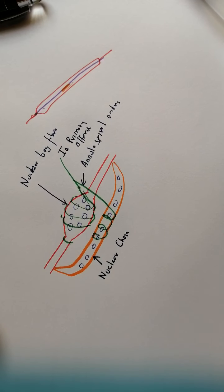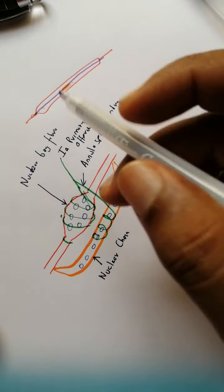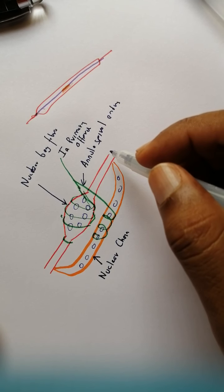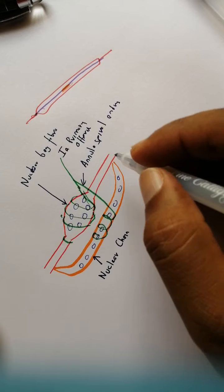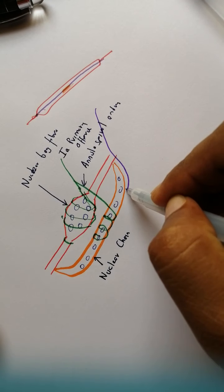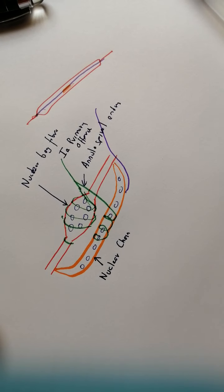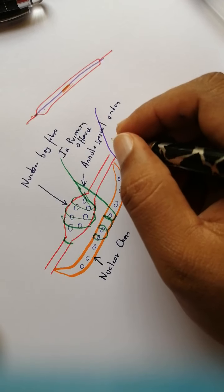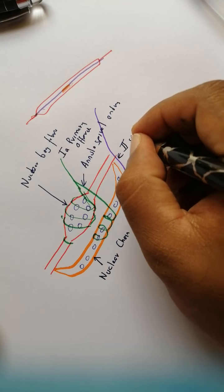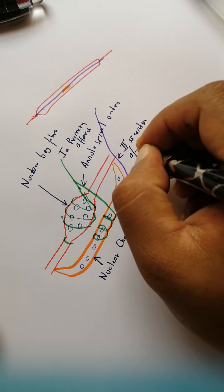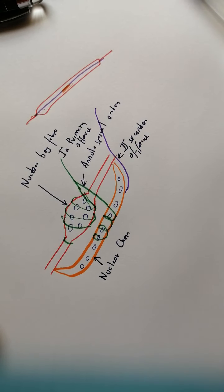There are also secondary afferents — the type 2 fibers. The type 2 fibers supply the nuclear chain fibers. These are the secondary afferents, which are the sensory fibers for the nuclear chain.